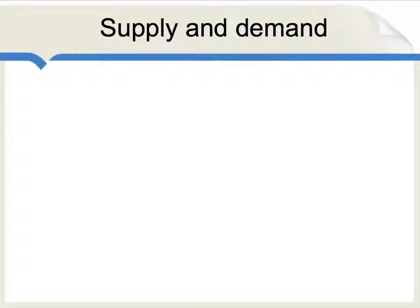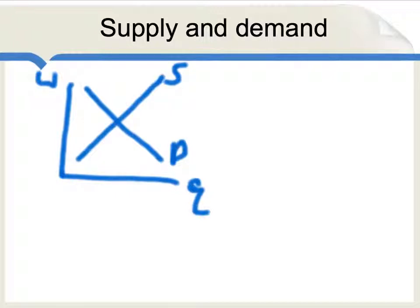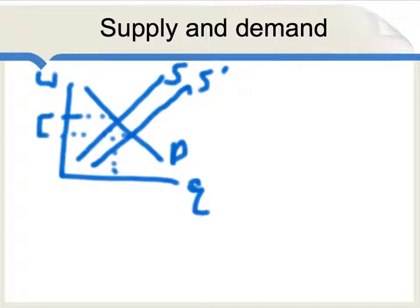Let me first show you what that intuition looks like using supply and demand graphs, and then show you a better way to think about the problem. Here we have the labor market — the vertical axis is wage, and here's the quantity of labor. We have a downward sloping demand curve for labor and an upward sloping supply curve. The common intuition is: with more immigration, you have a new supply curve which has shifted out, and a new wage level which is lower than the old wage level, and therefore it seems that by increasing the supply of labor, immigration lowers wages.